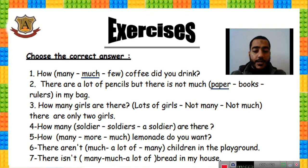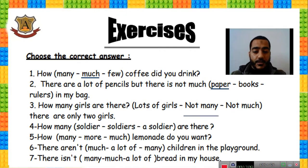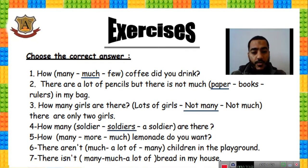Number three: How many girls are there? The sentence continues — there are only two girls, so they are not many. The answer is 'not many.' Number four: How many soldiers are there? Soldiers must be plural.